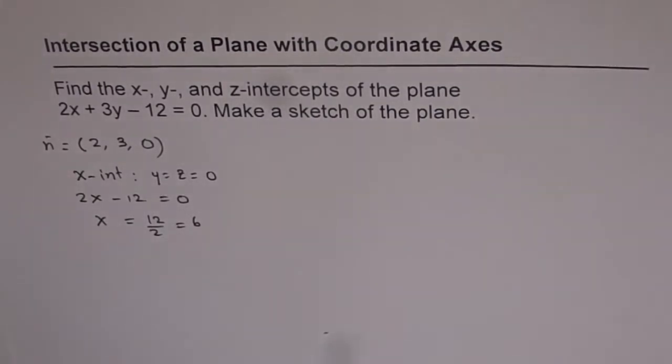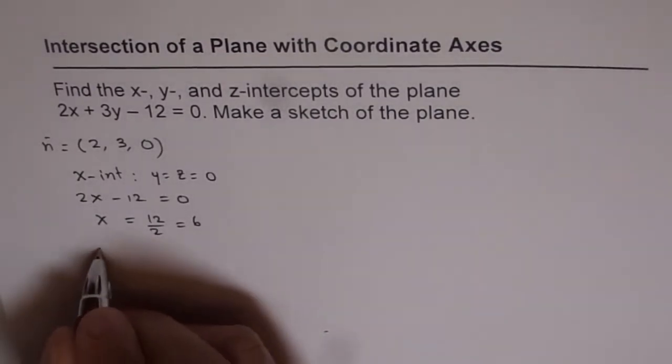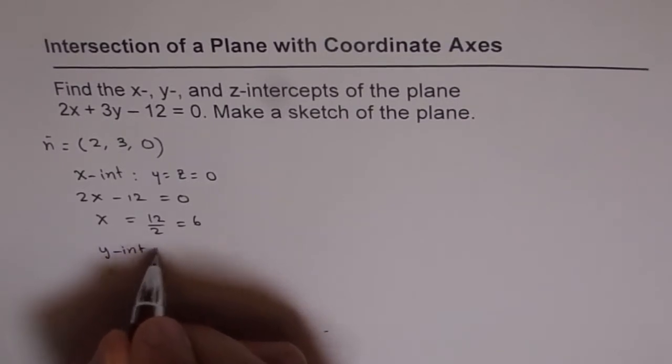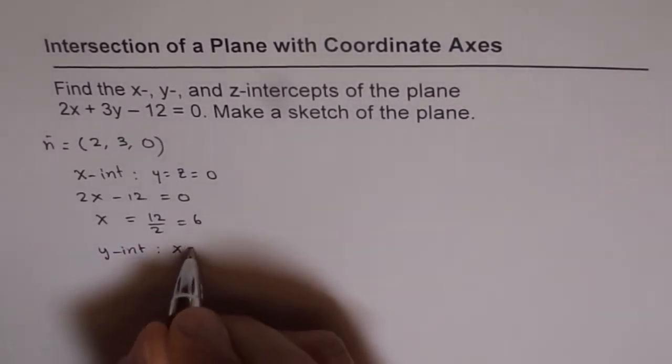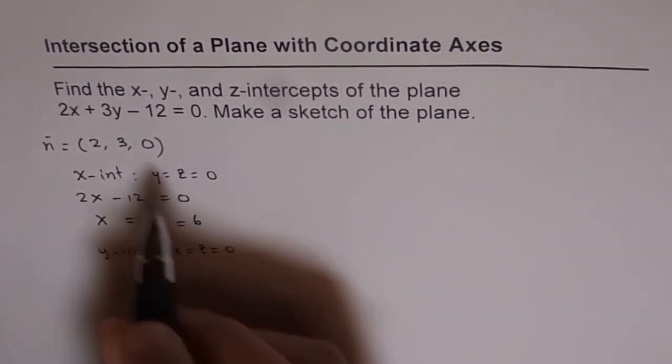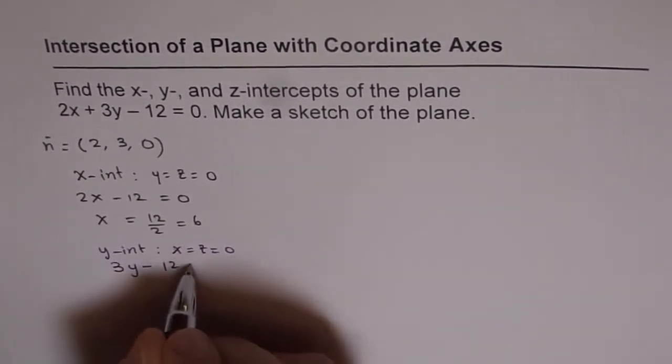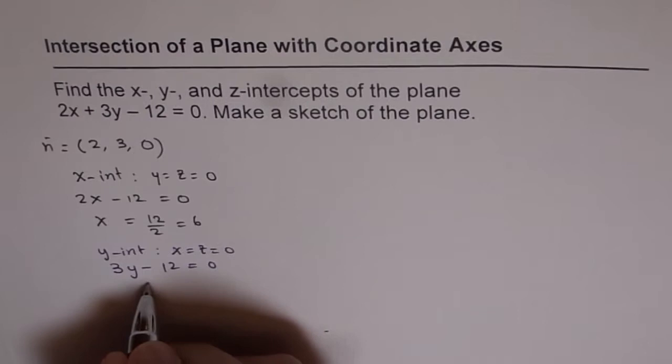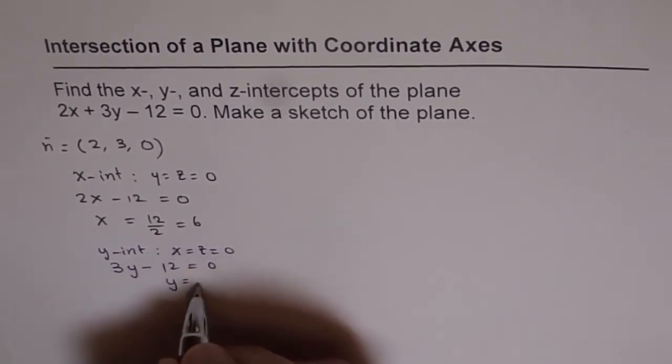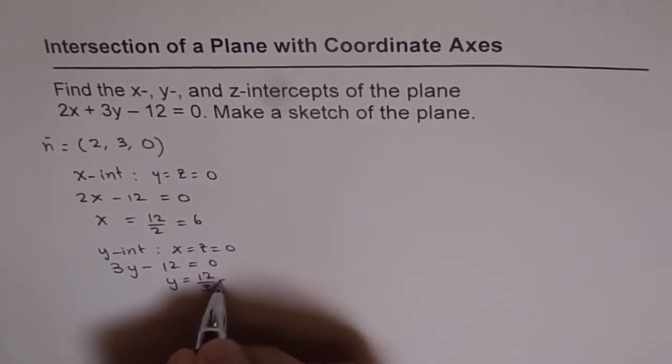Now let's find out what is the y-intercept. The y-intercept in this case is when x equals z equals 0. So when x is 0, we get 3y minus 12 equals 0. That means y equals 12 over 3, which is 4.